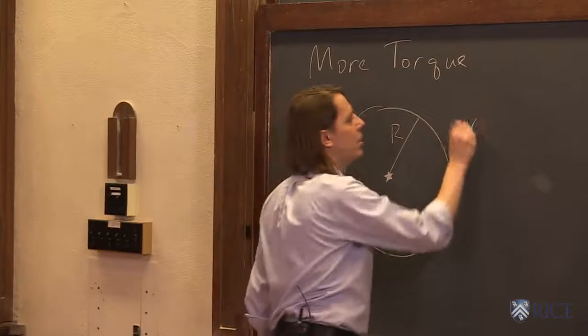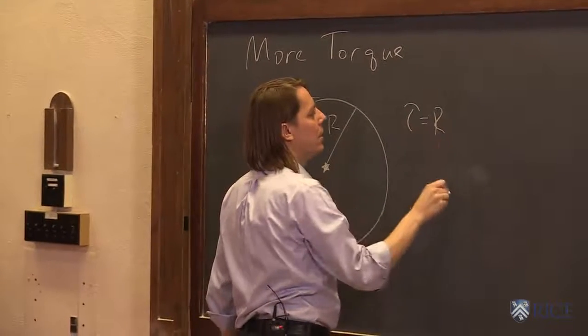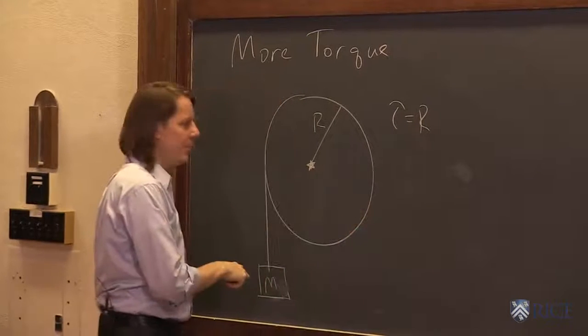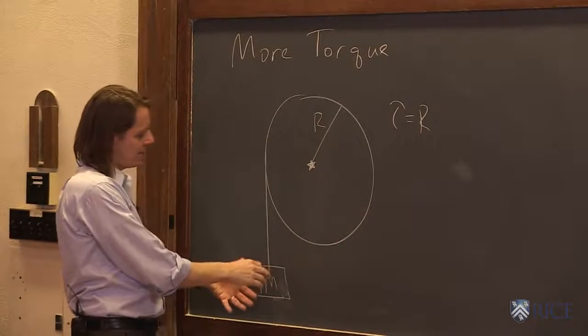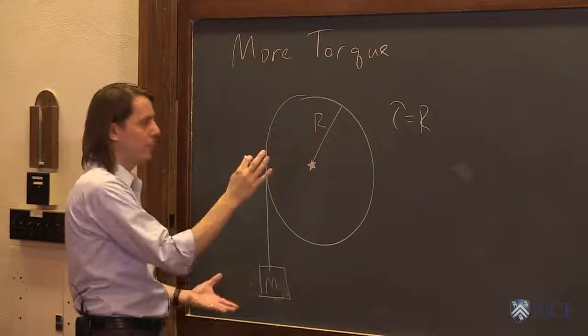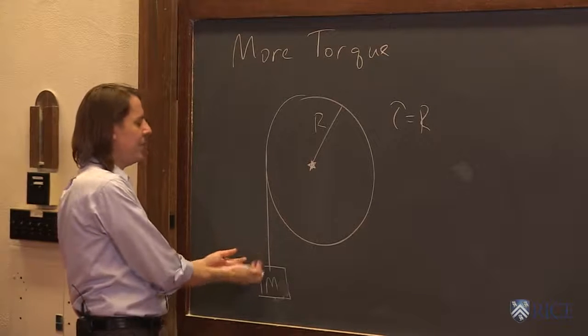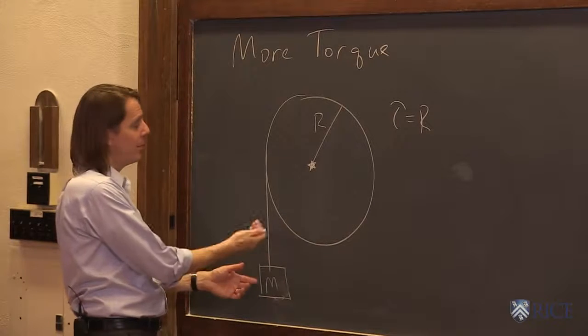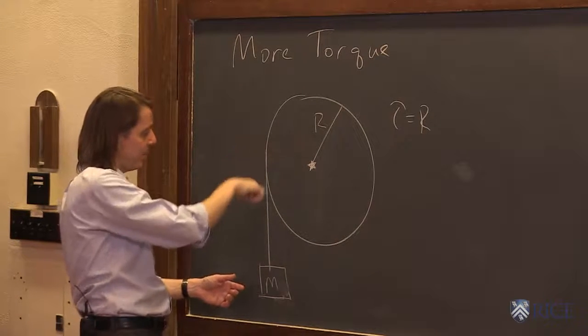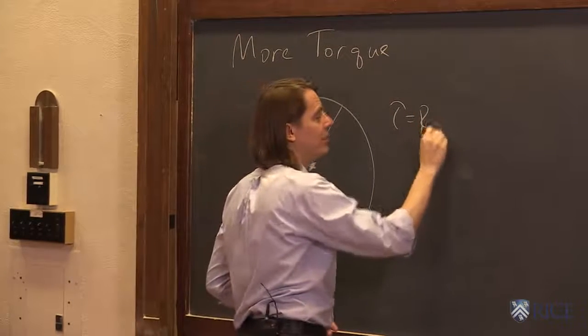So the torque, we recall, is the radius R times the force, which is mg in this case. So in this case, we're assuming that this is at rest. So what is the torque right when we release it from rest? We don't have this accelerating yet. So this has a force mg pulling down. The tension force is also mg back up. And that tension force also applies mg to the side of the wheel. So the force in this case is just mg.